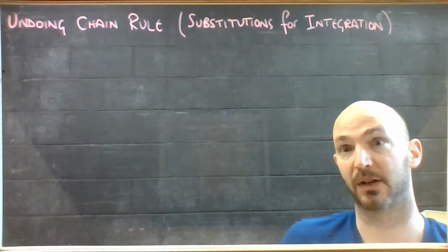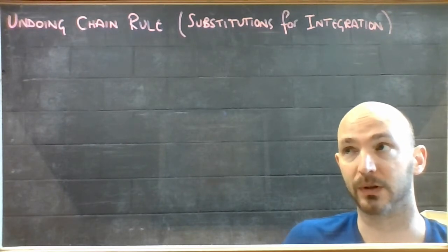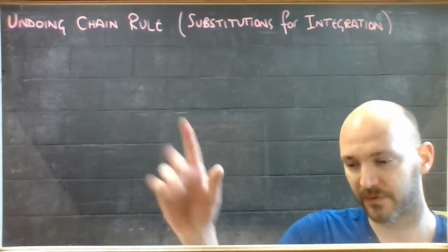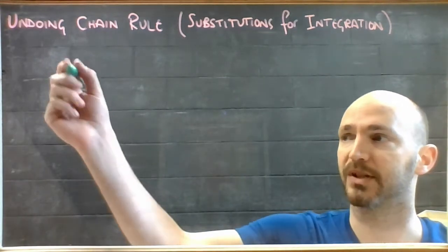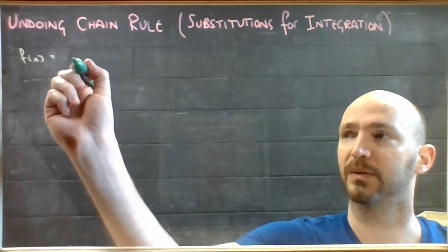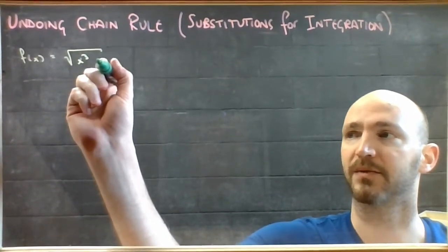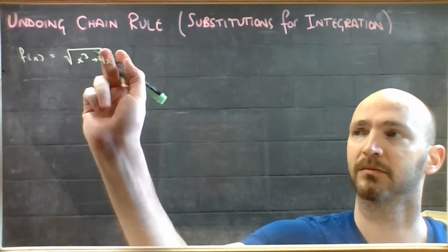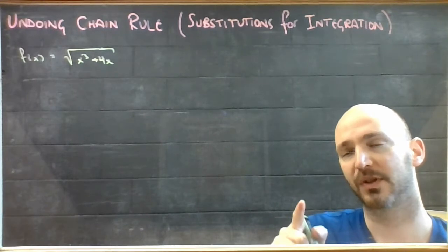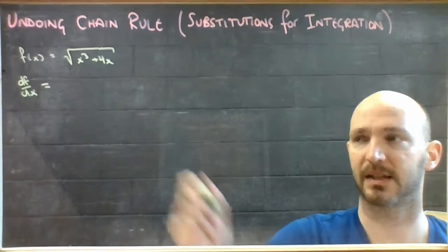The first technique we're going to explore is how to undo chain rule, now that you can do the basic integrals. I'm going to put up a function here that requires chain rule in order to solve it. Let's go with f of x equals the square root of x cubed plus 4x. If you were to do the derivative of this, you're going to have to use chain rule because it's a function inside a function.